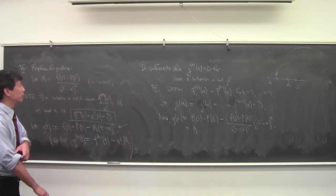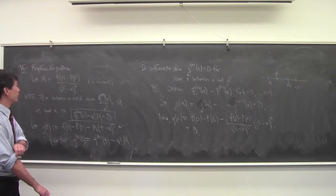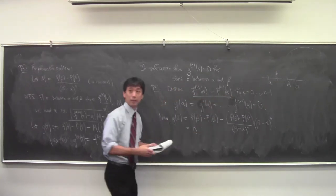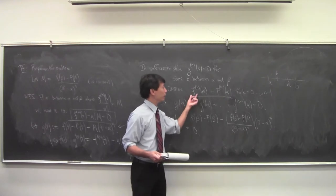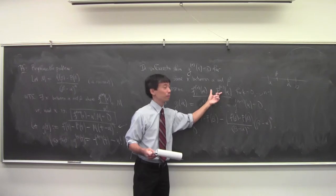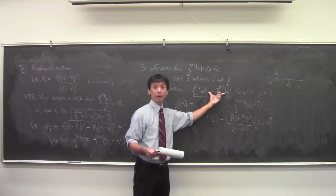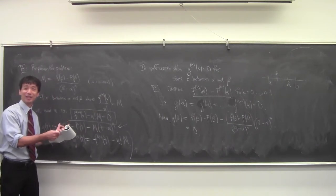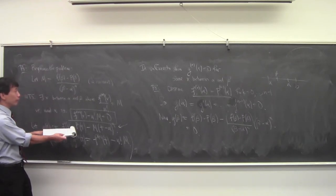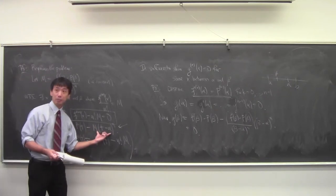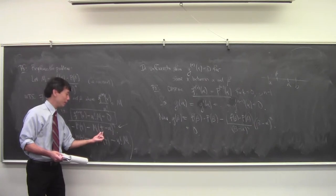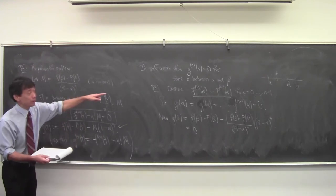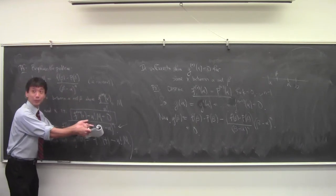In answer to why g(alpha) = g'(alpha) = ... = g^(n−1)(alpha) = 0: that comes from the observation that the derivatives of f and the Taylor polynomial P are identical at alpha up through degree n−1. When you take derivatives of g and plug in alpha, the last term vanishes because (t − alpha) evaluated at t = alpha is zero. And the difference f^(k)(alpha) − P^(k)(alpha) is zero by definition of the Taylor polynomial.